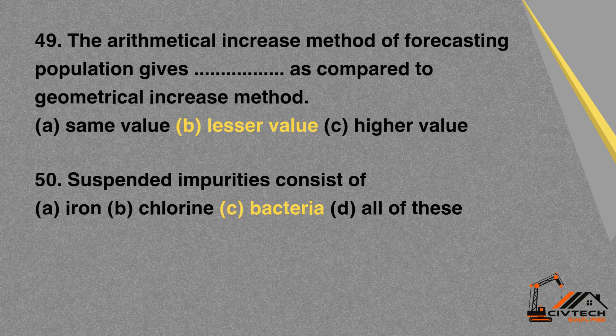MCQ 50: Suspended impurities consist of — A. Iron. B. Chlorine. C. Bacteria. D. All of these. Correct option: C. Bacteria.